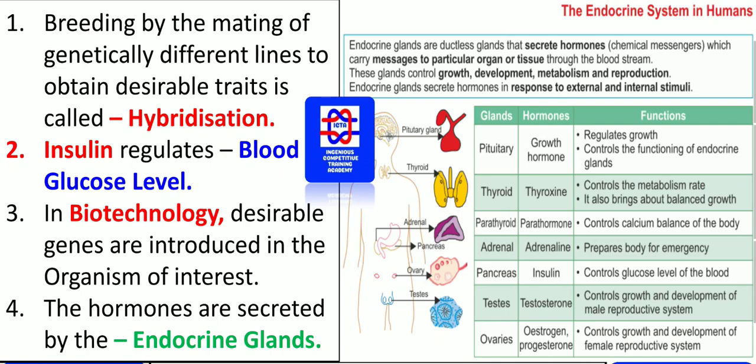Hybridization takes place in both animals and plants. Next, insulin regulates blood glucose levels. The pancreas releases insulin that controls and regulates the blood glucose level in the blood. In biotechnology, desirable genes are introduced into the organism of interest.